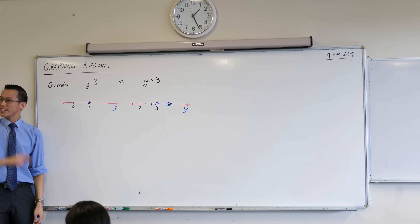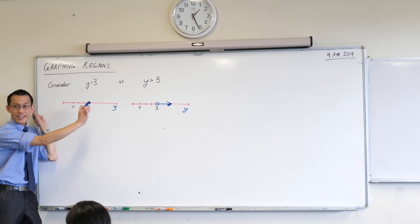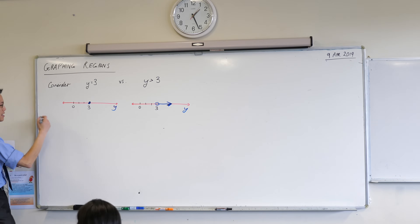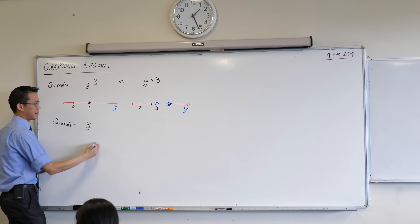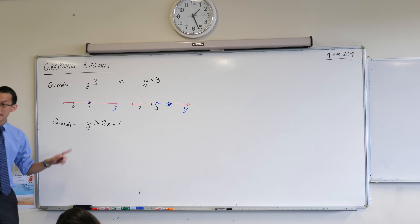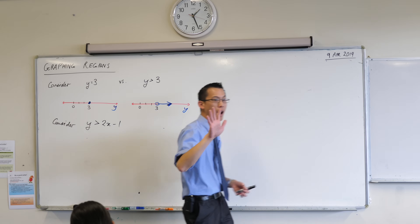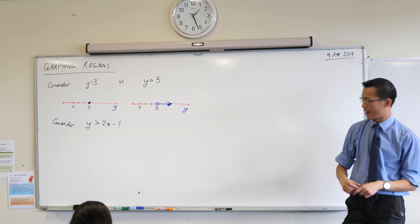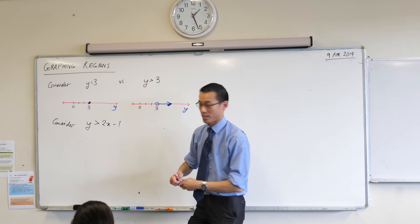Now this is just on the number line, but what we're going to do is go from one dimension into two. So underneath this, I'd love you to write with me: consider y is greater than 2x minus 1. I've got not just a y or an x but a y and an x, so I need two dimensions. I need a Cartesian plane to represent this. Go ahead and draw for me an x and a y axis.